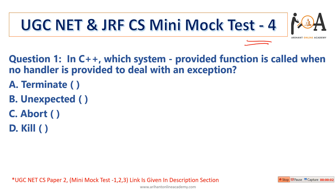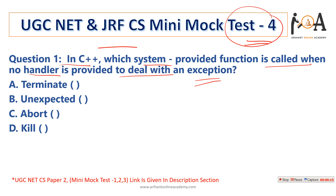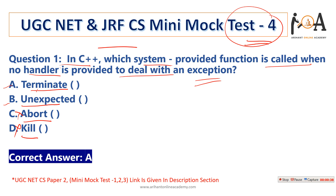Question 1 for UGC NET and GRF CS Mini Mock Test 4: In C++, which system-provided function is called when no handler is provided to deal with an exception? Option A: terminate, Option B: unexpected, Option C: abort, Option D: kill. Abort and kill are used to end or finish a process, forcefully or not. Unexpected is not the answer. The answer is Option A: terminate, which is the system-provided function called when no handler is provided to deal with the exception.